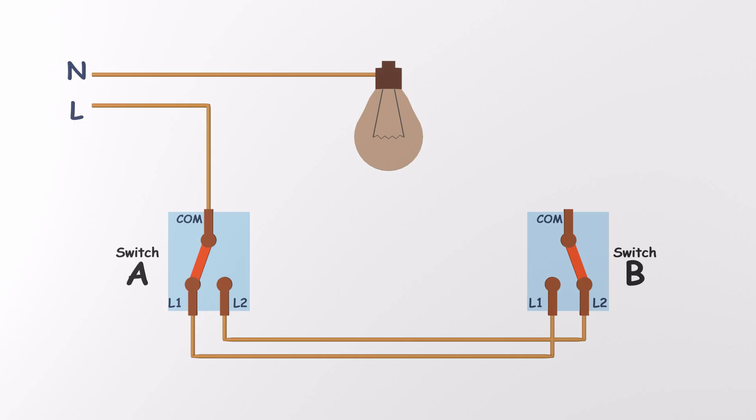Next, connect the neutral wire directly to one end of the light bulb. Then, connect the common terminal of switch B to the other end of the light bulb. That's it. You've just made a two-way switch circuit.